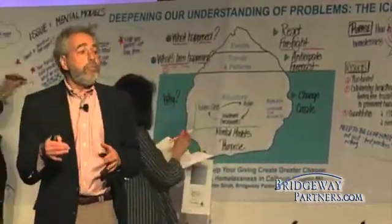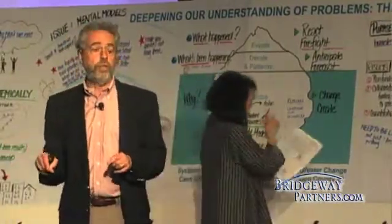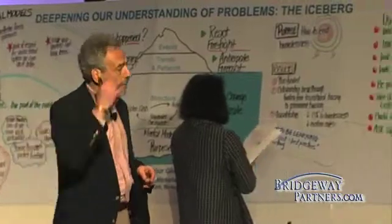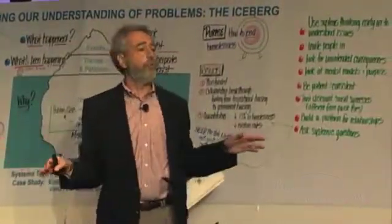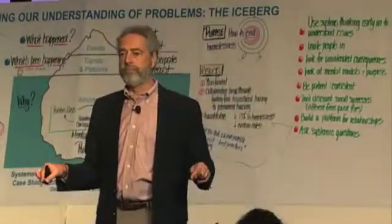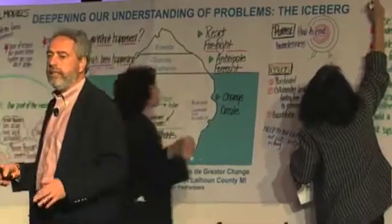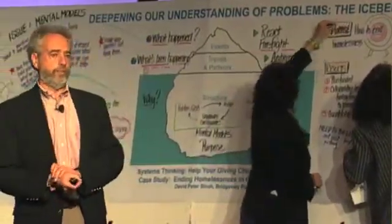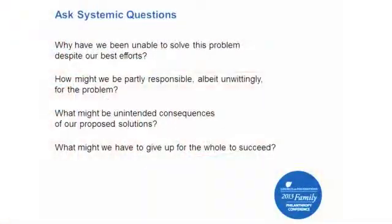Ask: what might be the unintended consequences of our proposed solutions? I did some work with the American Diabetes Association several years ago. They said the best thing they got out of working with me was even asking that question. And finally — and this may be the hardest one of all — what might we have to give up in order for the whole to succeed?